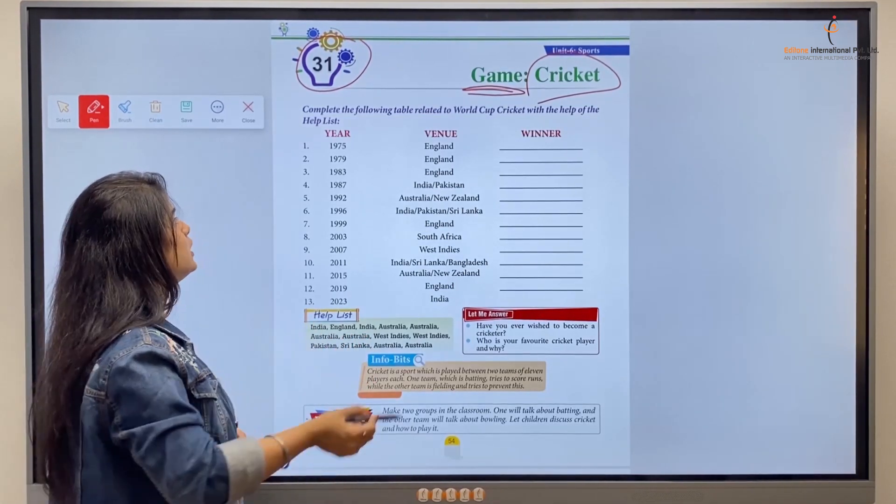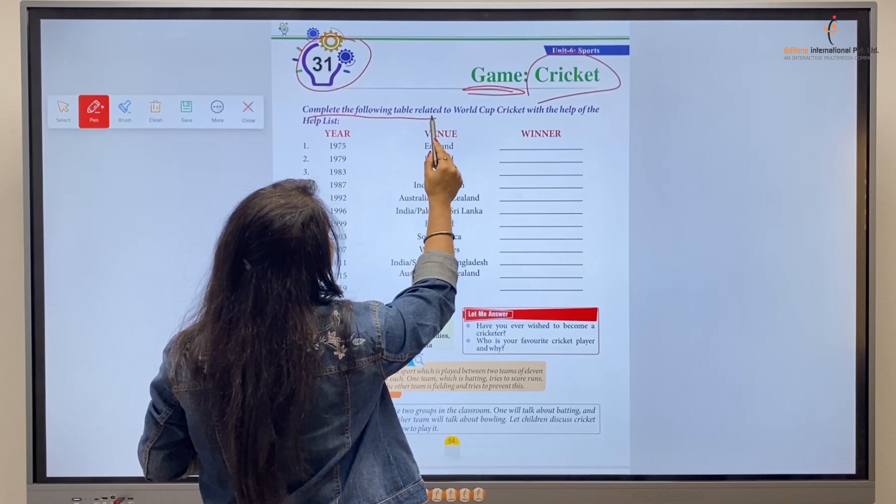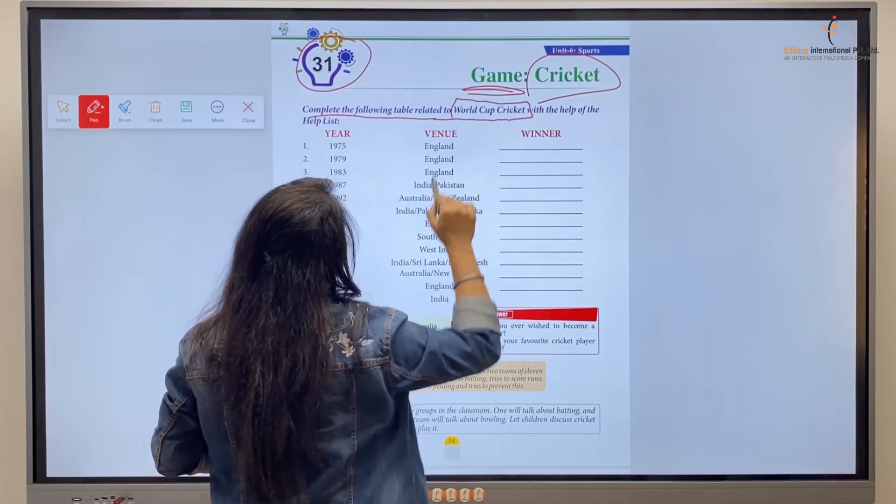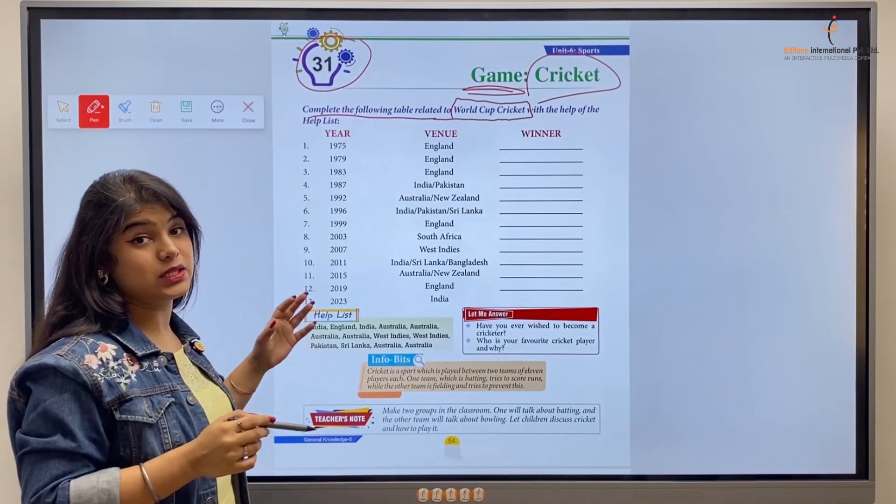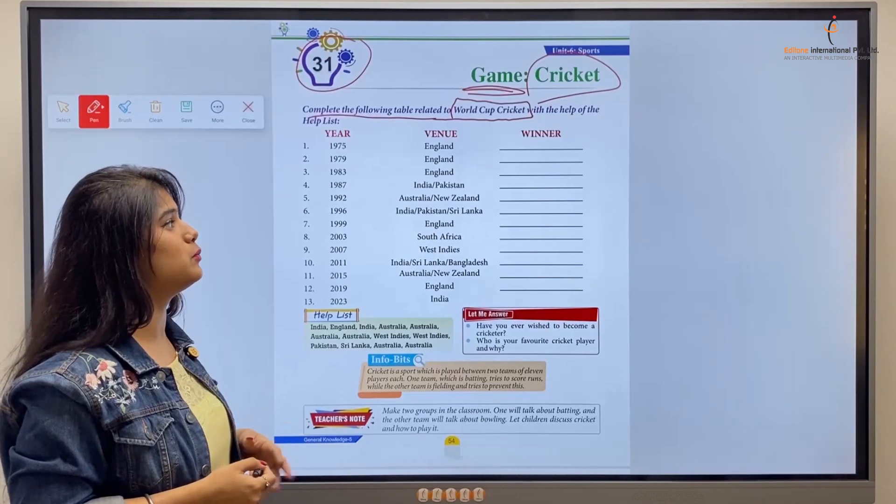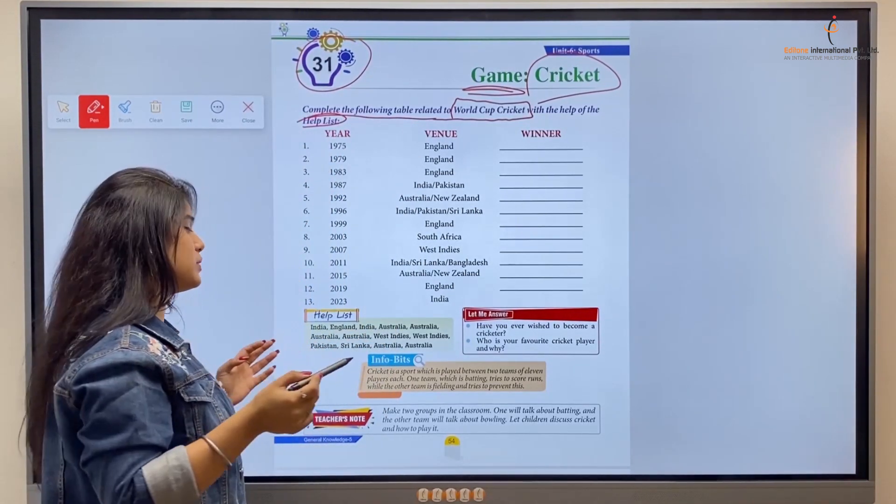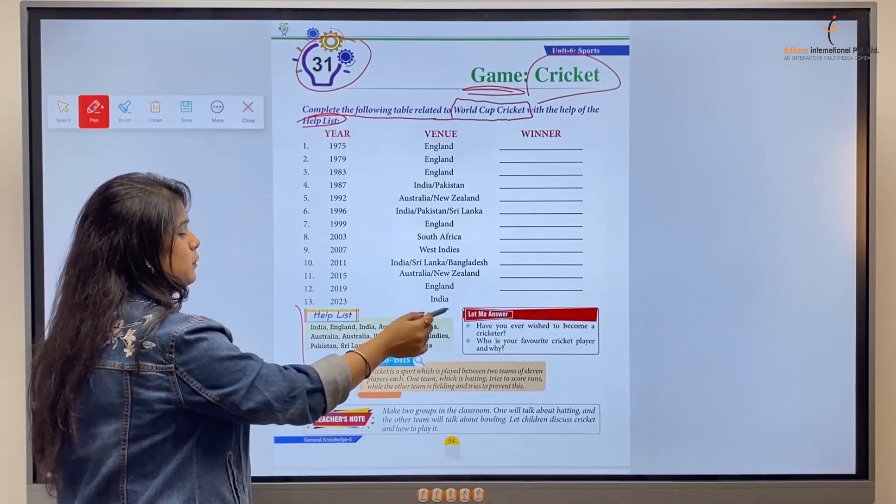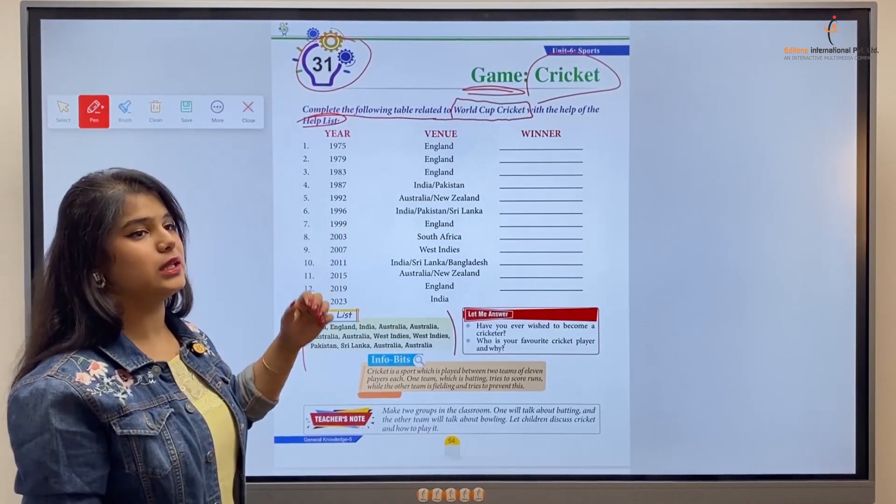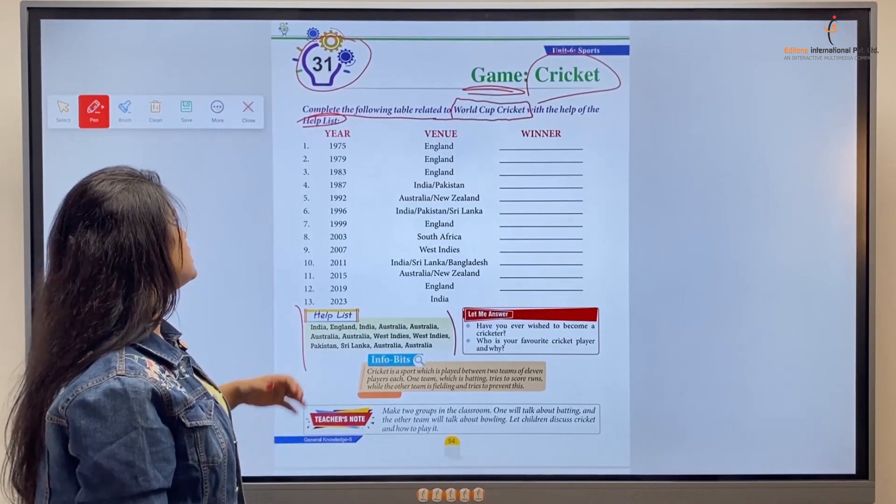So let's move forward. Complete the following table related to the World Cup Cricket. A Cricket World Cup related table is given below which we have to complete with the help of the helpbox. Here is the helpbox given to us. Now let's start the exercise, right kids?